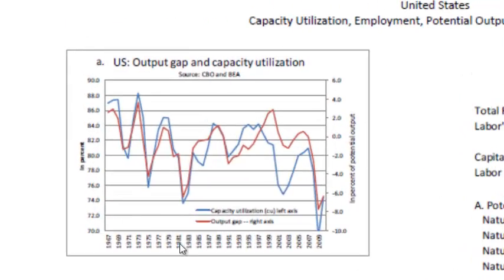Looking at a diagram of the U.S. output gap and capacity utilization: the capacity utilization is the blue line and the output gap as computed by the Congressional Budget Office is the red line. These two lines pretty closely correspond — when the output gap goes up, capacity utilization goes up; when the output gap is low, capacity utilization is low.